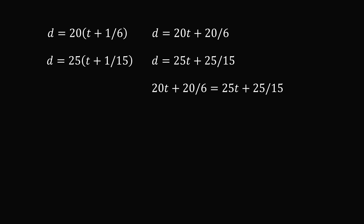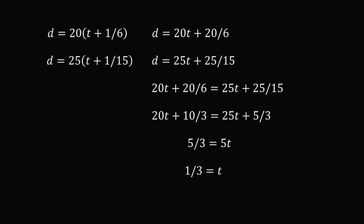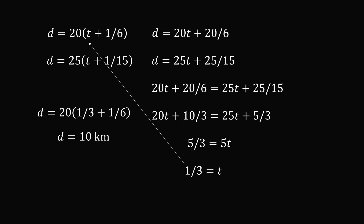Let's simplify the fractions. 20/6 reduces to 10/3, and 25/15 reduces to 5/3. So we have 20t + 10/3 = 25t + 5/3. Subtracting 5/3 and 20t from both sides gives 5/3 = 5t. Dividing both sides by 5 gives t = 1/3. Substituting into the first equation: 1/3 + 1/6 = 1/2, and 1/2 × 20 gives us d = 10 kilometers.